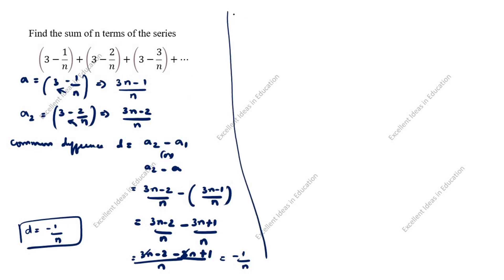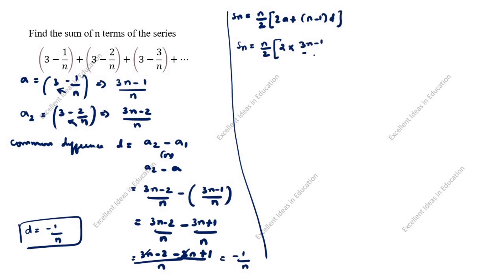The sum of n terms formula is: Sn = n/2 × (2a + (n-1)d). Substituting: Sn = n/2 × (2 × (3n-1)/n + (n-1) × (-1/n)).